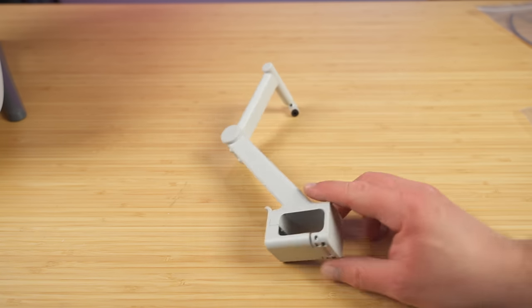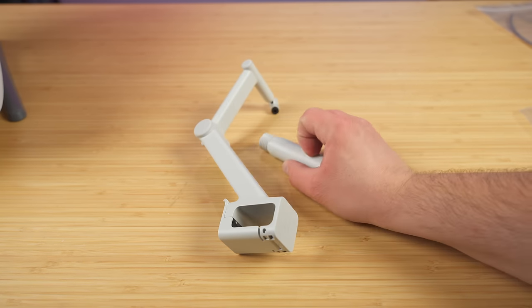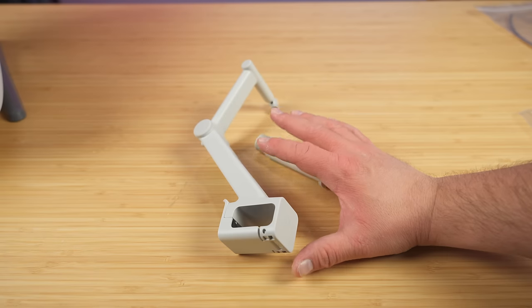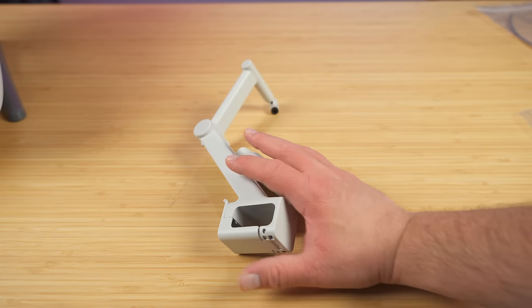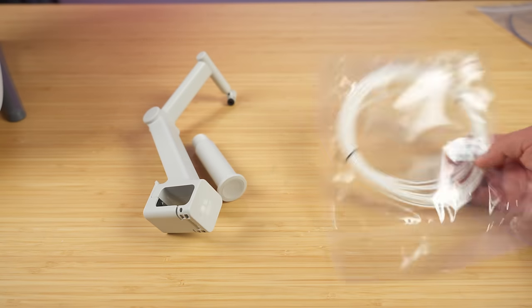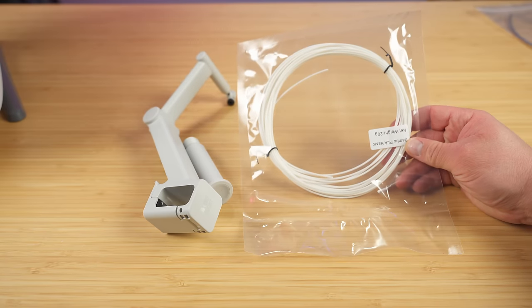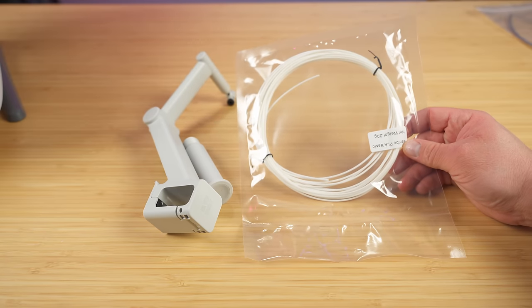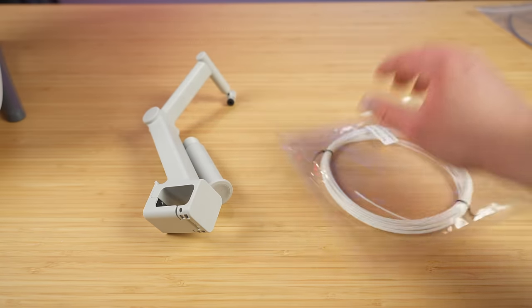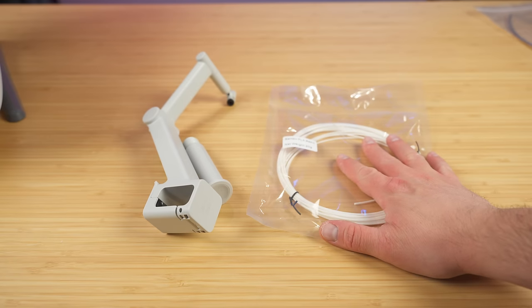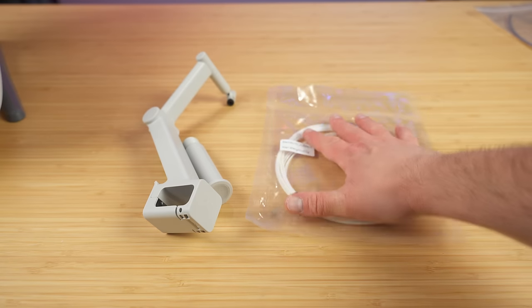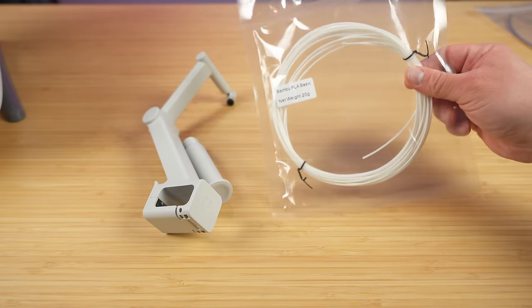It includes everything you need in the box, including a single spool holder. This would come in handy if you don't have the AMS. It comes with a little tiny bit of filament and I hate to see this. I want to see a full size roll or at least a half a roll. Bamboo Lab, if you're listening, please don't be like everybody else and do this.